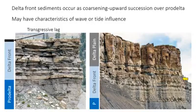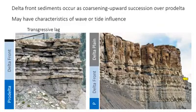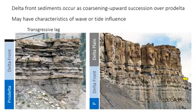In the delta front, because it's above wave base, there may be some signals of wave or tide influence. You might see some sedimentary structures like wave ripples or bi-directional crossbeds, depending on the type of delta.